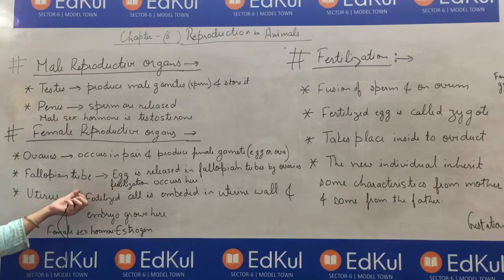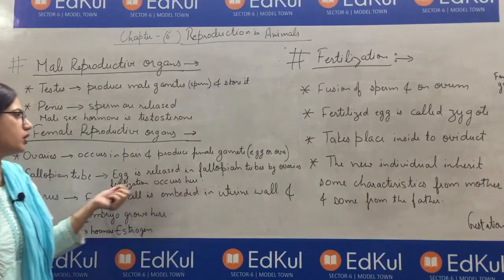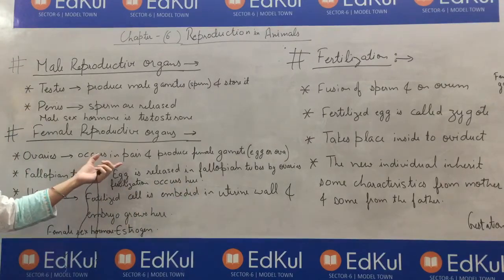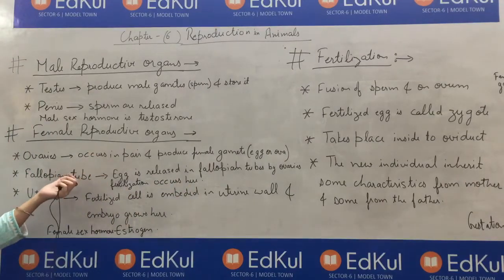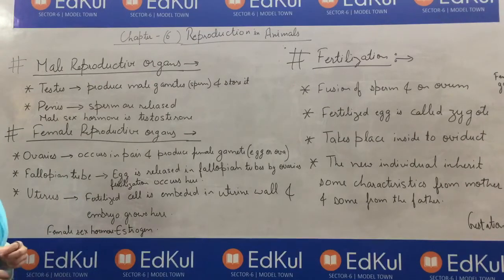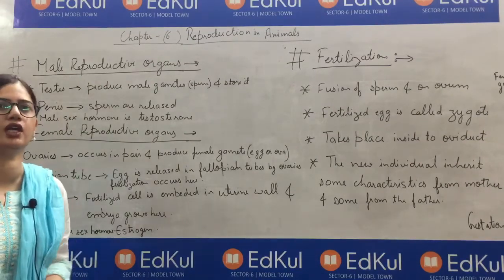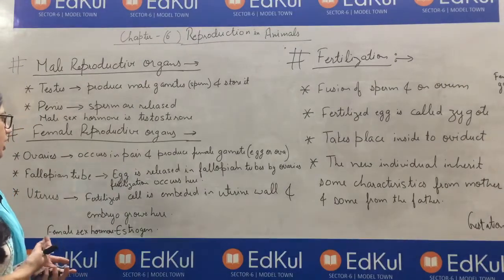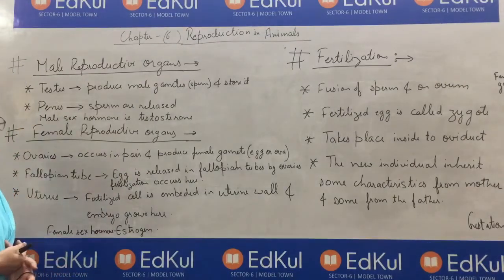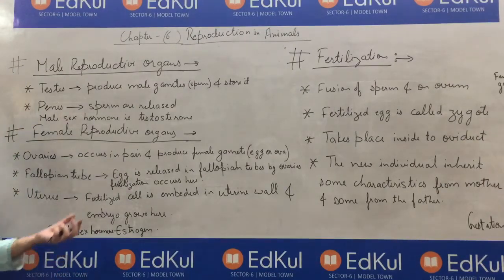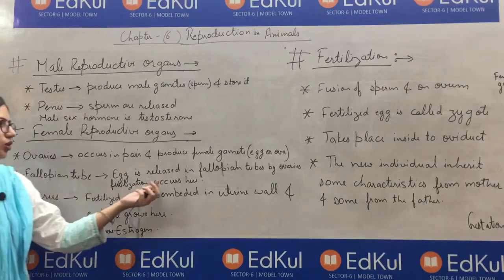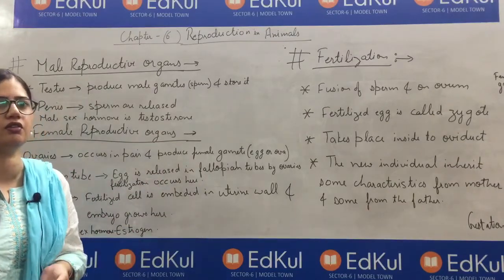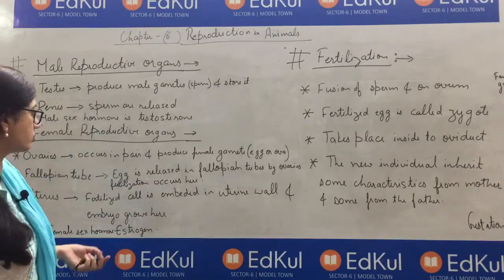When the egg is formed, it is released into the fallopian tube. The egg travels through the fallopian tube where it remains for 3 to 4 days until fertilization takes place. If fertilization does not take place, then this egg is damaged.